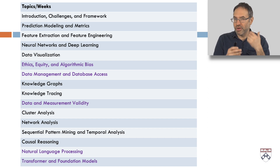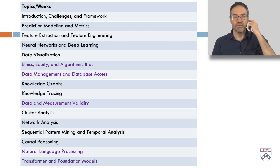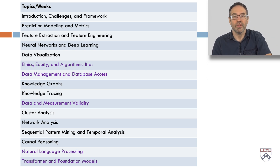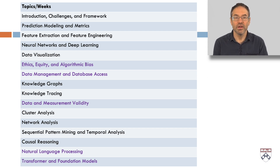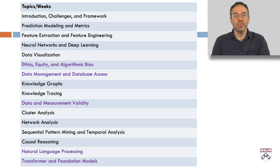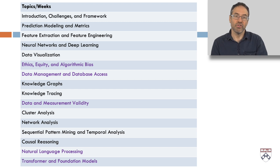We'll go on to another form of prediction modeling — knowledge tracing — which is measuring student knowledge as it changes in a digital learning platform from their performance. From there: data and measurement validity, cluster analysis, network analysis, sequential pattern mining and related temporal analysis methods, causal reasoning and causal data mining, natural language processing, and finally a week on transformer and foundation models — bringing together how large language models really transform the practice of all these things.